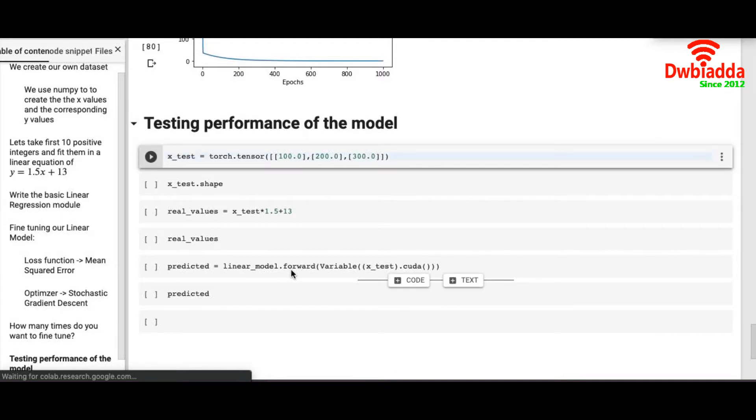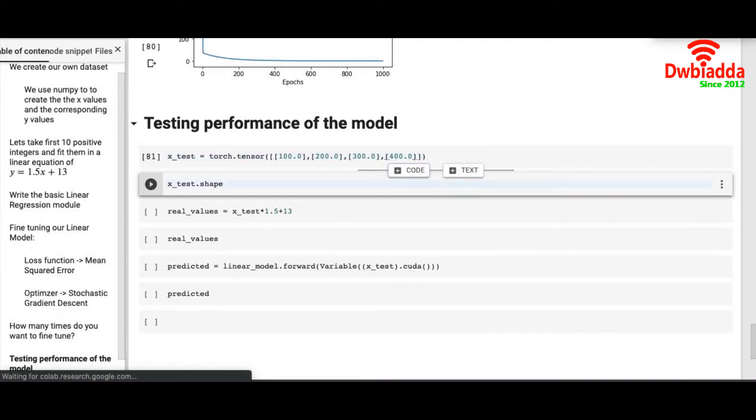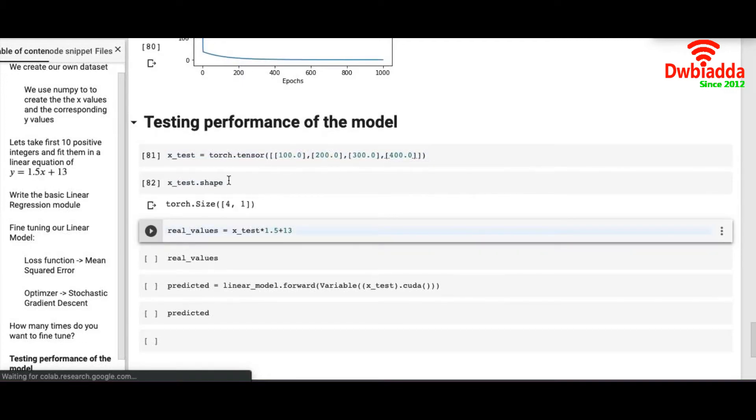To test our performance we take three values: 100, 200 and 300. Just remember you have to create an array of small arrays. So if you want to add another test data point or test x value just create another array and insert 400. You can check the shape of the x_test. It is 4 comma 1 which means I have 4 x values to test.